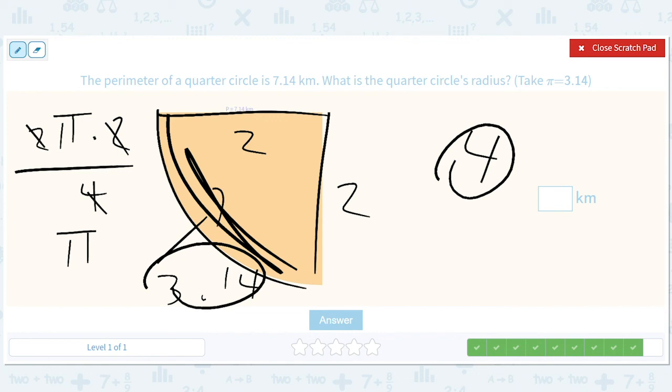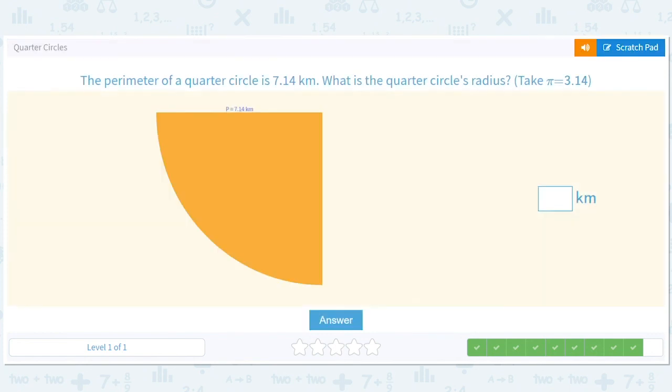So, you know, guess and check is another way of doing it. But, you know, we've also done it more systematically. And guess and check won't work if the answer isn't perfect like 2 or 3 or 4, right? But, you know, sometimes you get lucky. So the answer here is 2 kilometers.